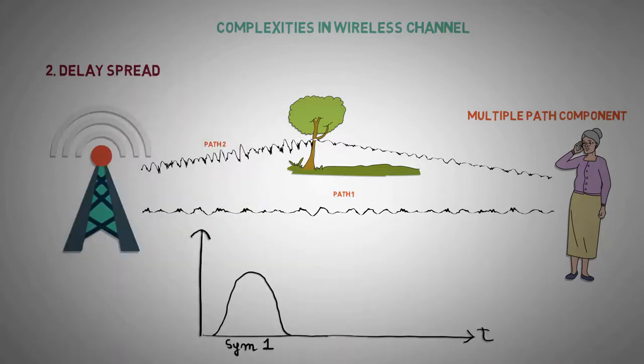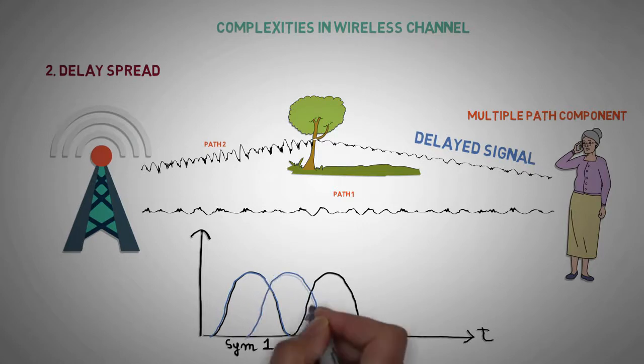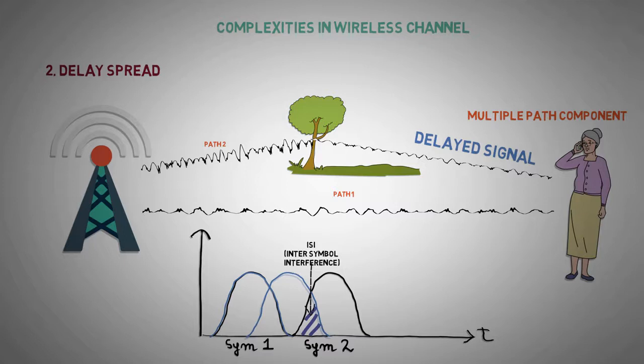Delay spread: As a consequence of multipath propagation, the duration of a symbol gets extended. This may interfere with the next symbol. This is called inter-symbol interference or crosstalk. Guard periods are introduced to avoid crosstalk.